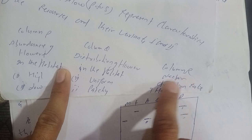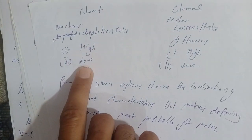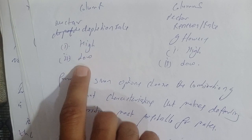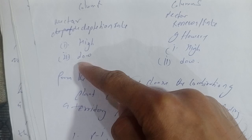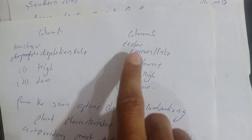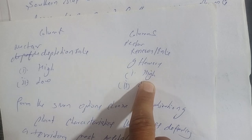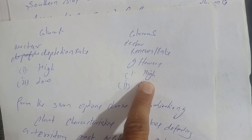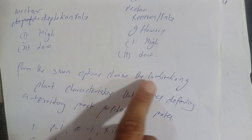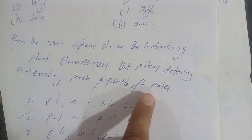The third column S relates to the Nectar Renewable Rate of the flower. If the renewable rate is high, then the system will go high on nectar, meaning the flower will be actively visited and nectar will be depleted. So for the given options, we need to choose the combination of plant characteristics depending on a territory most profitable for the male.